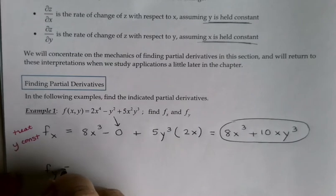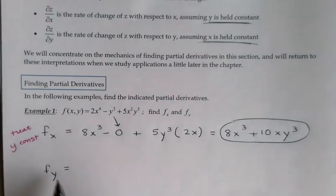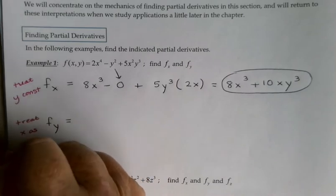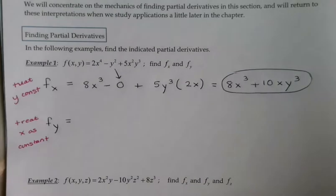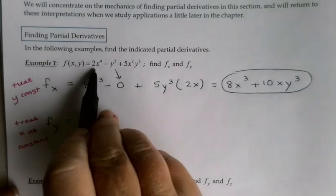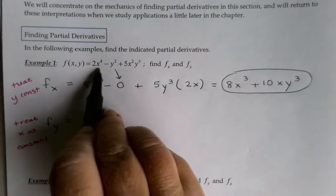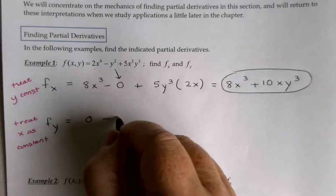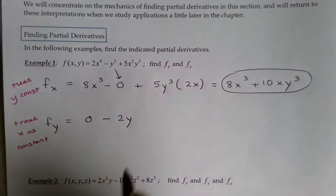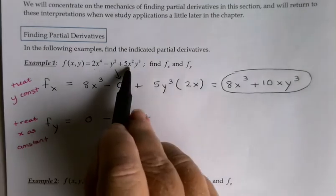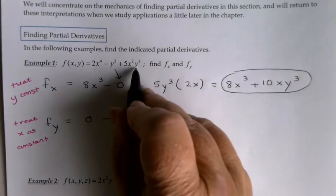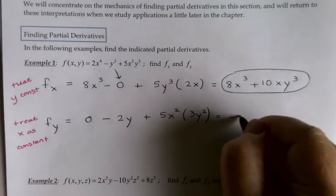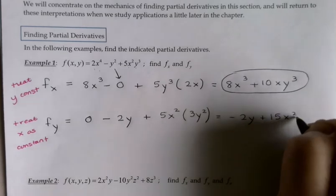For the derivative of f with respect to y, y is the variable, so we treat x as our constant. The term 2x to the 4th is constant, so its derivative is 0. Minus — the derivative of y squared is 2y as usual. Plus, 5x squared is a constant multiplier times the derivative of y cubed, which is 3y squared, giving negative 2y plus 15x squared y squared.